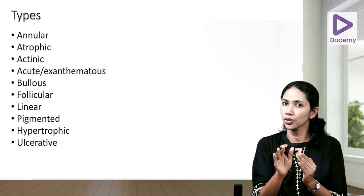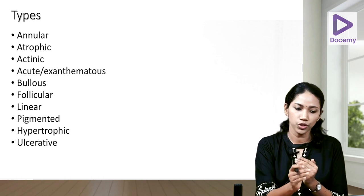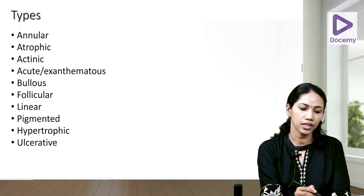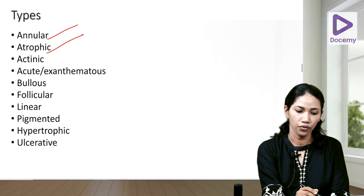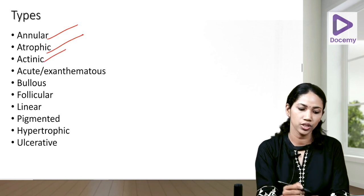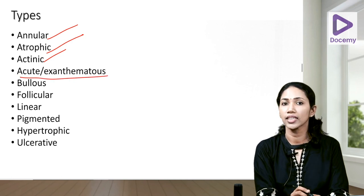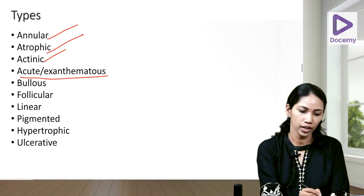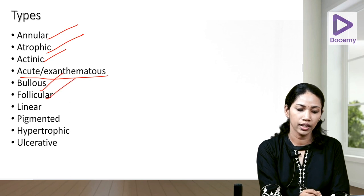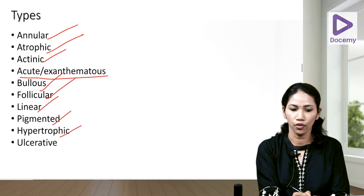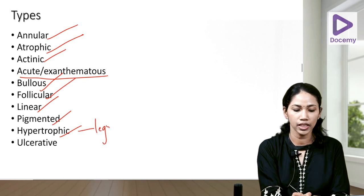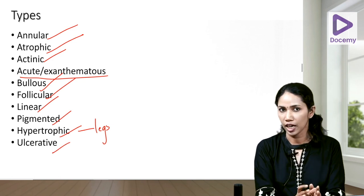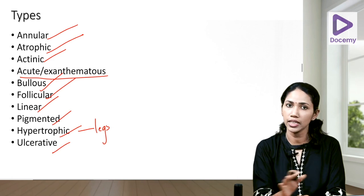There are different clinical variants of lichen planus which may pose a diagnostic challenge. These include annular, atrophic, actinic (on sun-exposed areas), acute or exanthematous (numerous lesions over a short period), bullous, follicular, linear, pigmented, hypertrophic (large heaped-up lesions usually on the legs), and ulcerative forms. Remember as many names as possible.